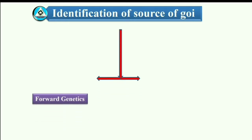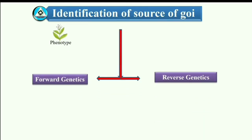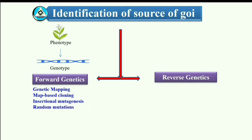The source of gene of interest can be identified by forward or reverse genetics. Forward genetics is an approach to identify genes or set of genes responsible for a particular phenotype of an organism. It can be achieved through genetic mapping, map-based cloning, insertional mutagenesis, random mutations, etc.